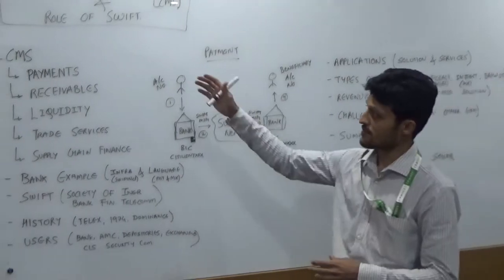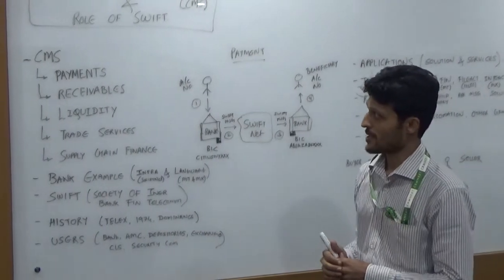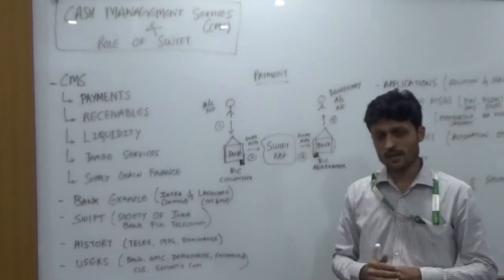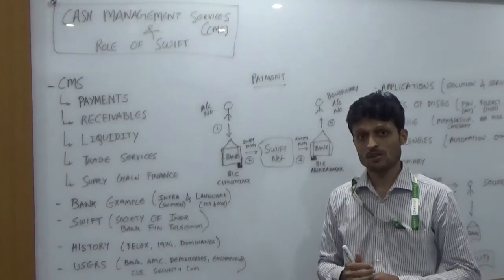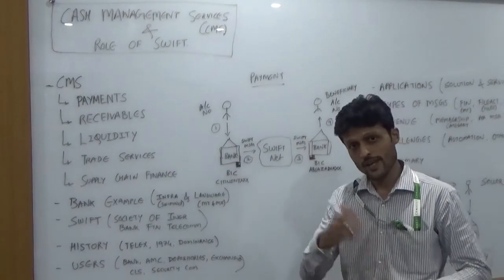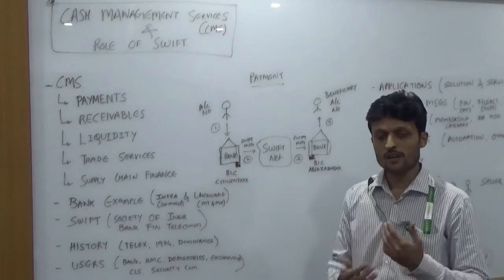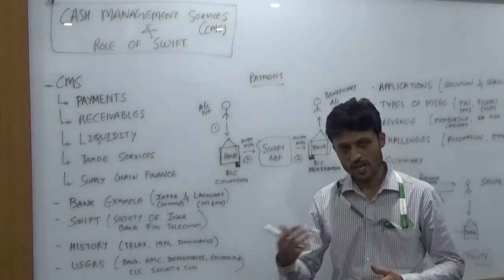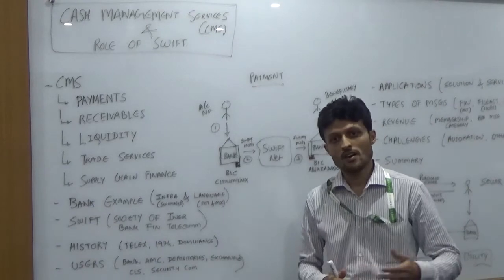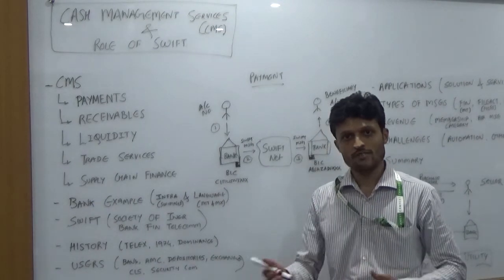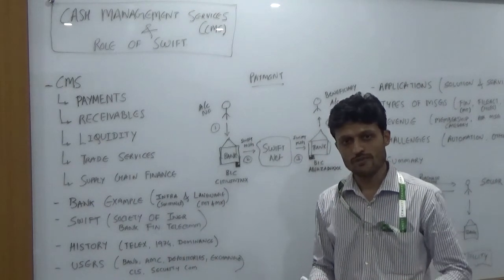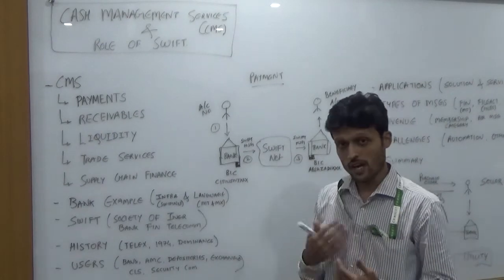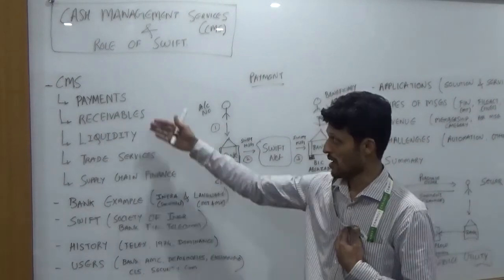I will start with the first point: cash management services. In day-to-day routine, I usually manage my own income and expenses. The income I earn through my salary, probably through my business profit, farming land, or the interest I earn from dividends, mutual funds, etc. These are the sources of income, which is kind of receivable for me.